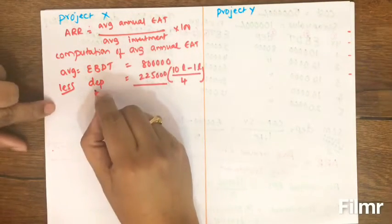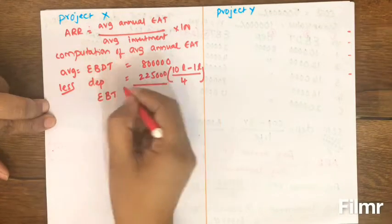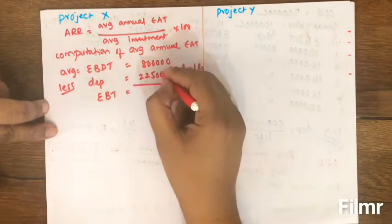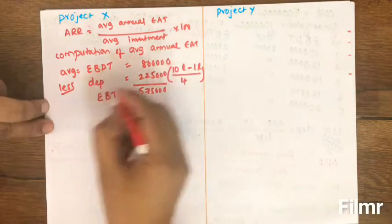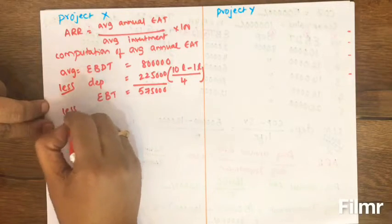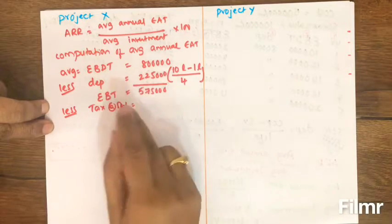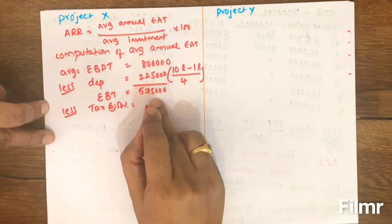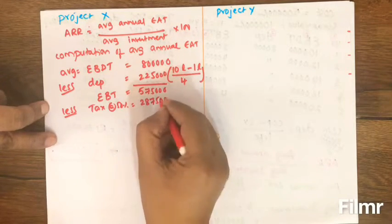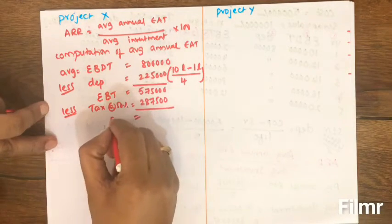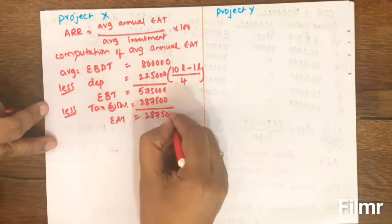After charging depreciation from EBDT: 8 lakhs minus 2 lakhs 25,000 gives earnings before tax of 5 lakhs 75,000. Deducting tax at 50% — that is 2 lakhs 87,500 — we arrive at Earnings After Taxes (EAT) of 2 lakhs 87,500.